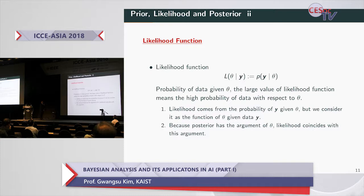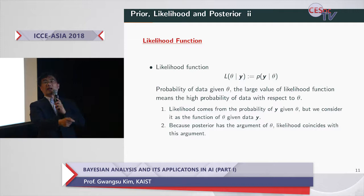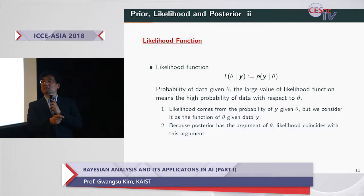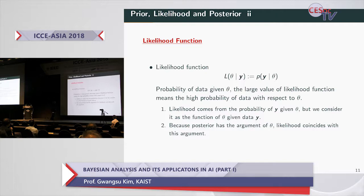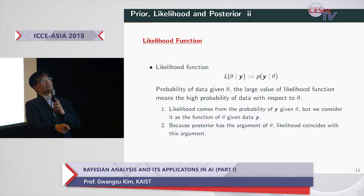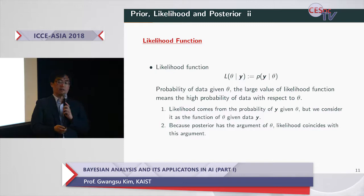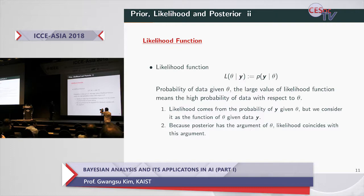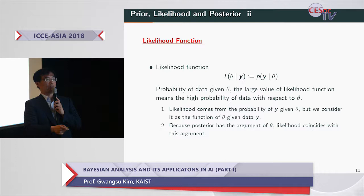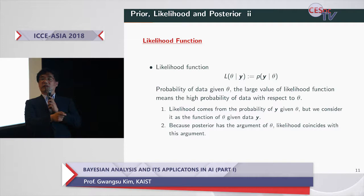First, we observe the likelihood function. The likelihood function L(theta given Y) is defined as p(Y given theta). What is the difference from the probability of Y? The argument differs. The likelihood comes from the probability of Y given theta, but we think theta is fixed unknown. In Bayesian analysis, we treat theta as random, so we consider the likelihood as a function of theta given fixed observed data Y.